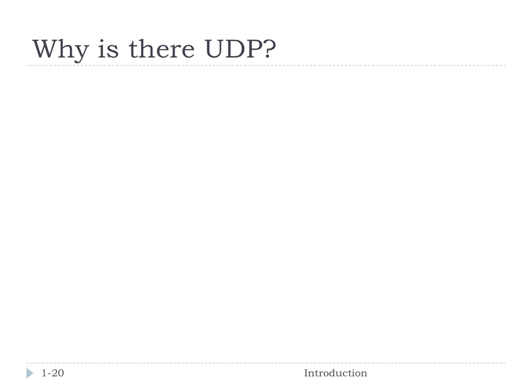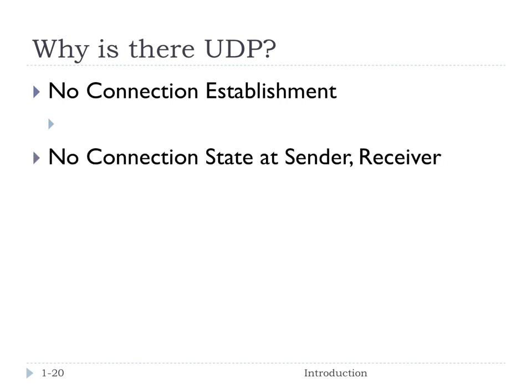Given that setup, why is there a UDP? Speed. First, there's no connection establishment, and that means it's going to be fast — we don't have to have this time overhead where we wait. Second, there's no connection state at sender and receiver. TCP maintains state so both sides know what segment they're expecting next, but UDP doesn't have to store or process that additional information. That's simpler and faster.